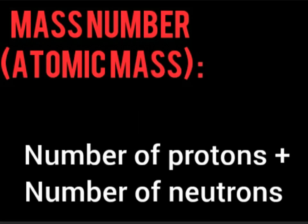The mass number of an atom is the number of protons and neutrons inside the nucleus. So the mass number is the sum of the number of protons and neutrons. The addition of proton count and neutron count gives the mass number of an atom.